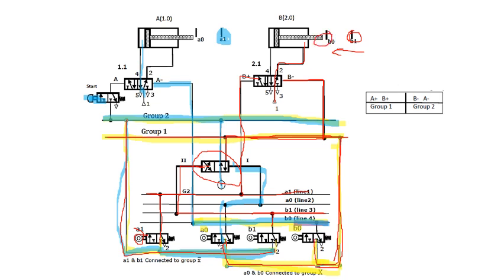The B0 signal provides an input to memory valve 1.1. Memory valve 1.1 then supplies air to the rod end of cylinder A, causing cylinder A to retract. When cylinder A retracts fully, A0 is hit. A0 changes the group supply itself — switching the supply from group 1 back to group 2. Group 2 is now connected to the limit switches A1 and B1, and also has the start button connection. So until the start button is pressed again, the next sequence will not start. This is how the cascade method works.